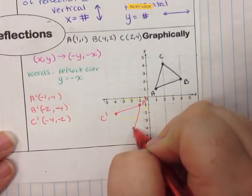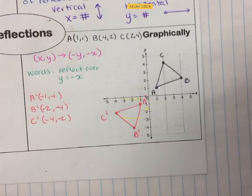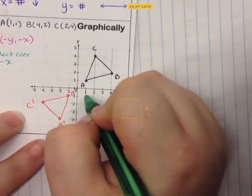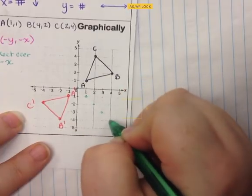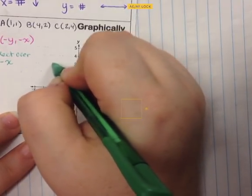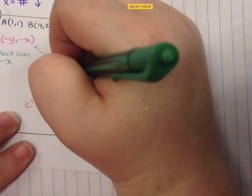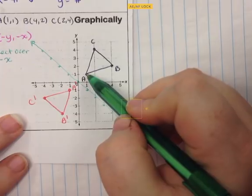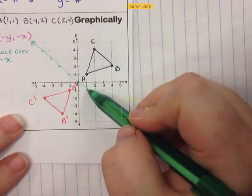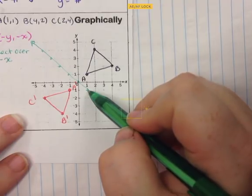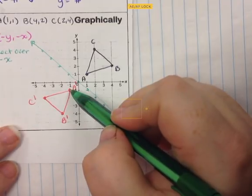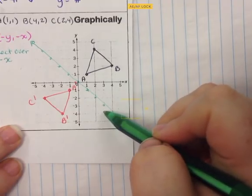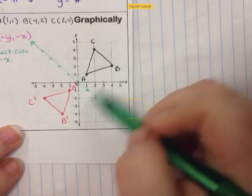A' is at (-1, -1), B' is at (-2, -4), and C' is at (-4, -2). Connect the coordinates and we can see if they are reflected. We said it was reflected over y equals negative x. Drawing y equals negative x through the origin — slope down 1, right 1 — I can draw this diagonal line and check. Counting from A to the green line is down 2, then going left 2 reaches A'. Counting from B confirms B to B' is also correct.